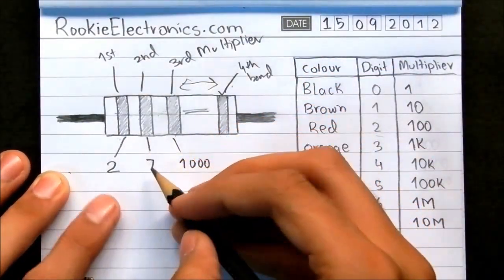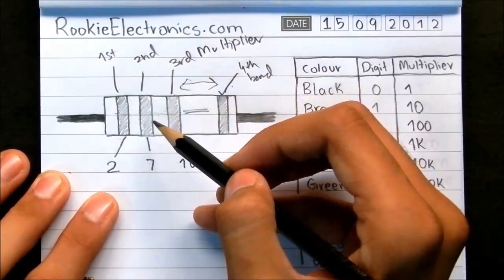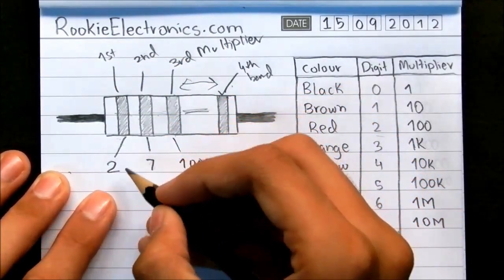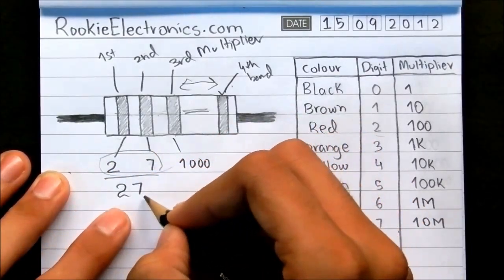Now, as I told you, the 1st band and the 2nd band represent the 1st and 2nd most significant digits. So this thing will be taken as 27 as a number.